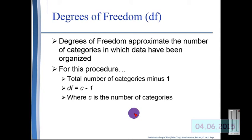for, maybe, and against, that is 3 categories minus 1, or the degrees of freedom would then be 2.